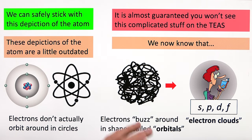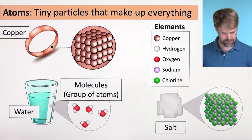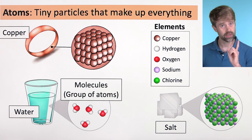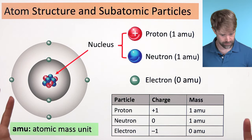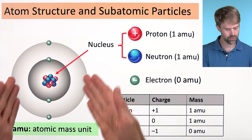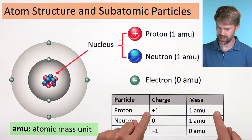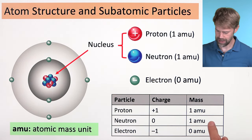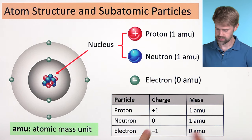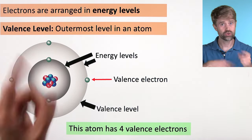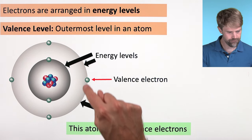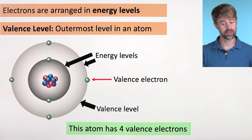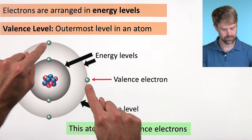Let's do a quick review of everything we've learned. Atoms are tiny particles that make up everything, and there are different kinds of atoms called elements. If we look closely at one atom, it has a particular structure: protons and neutrons in the nucleus, and electrons moving outside the nucleus. Protons have a charge of plus one and a mass of one AMU. Neutrons have a charge of zero and a mass of one AMU. Electrons have a charge of negative one and essentially no mass. Electrons are organized into energy levels or shells, and the outermost is the valence level, containing the valence electrons.